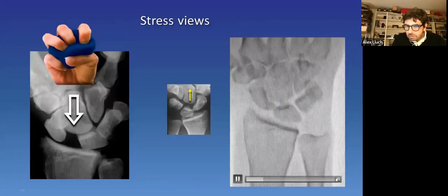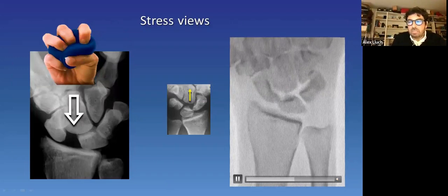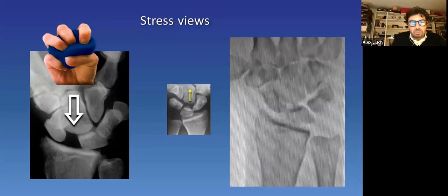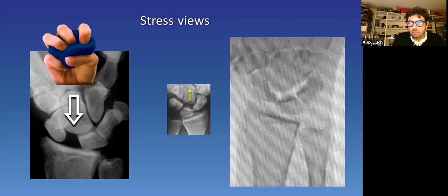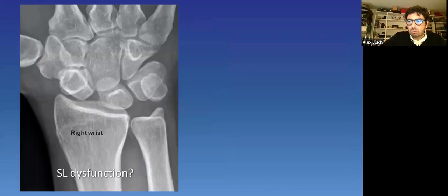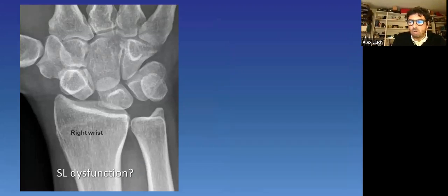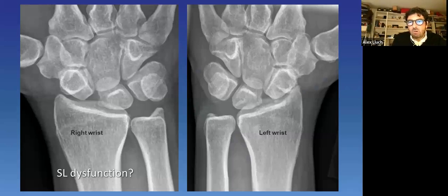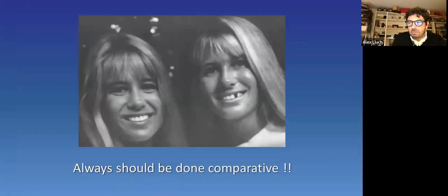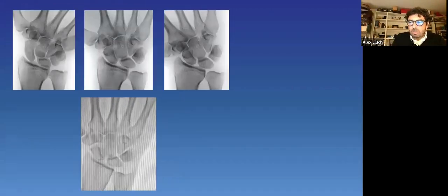Stress views in compression and traction can be useful. The first looks for a separation, while the second to create a step and a disturbance of Gilula's line. Take a look to this AP view. The classics are here. The ring sign, Terry Thomas sign. If this wrist belongs to a young male that has a history of several traumas, as he does many contact sports, almost all of us will agree that he has a scapholunate dysfunction. But take a look at the other side. It's the same image, or even worse. This is just the proof that radiological imaging has to be compared always to the uninjured side, as well as the clinical exam.